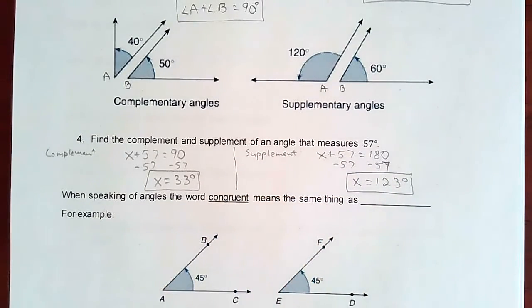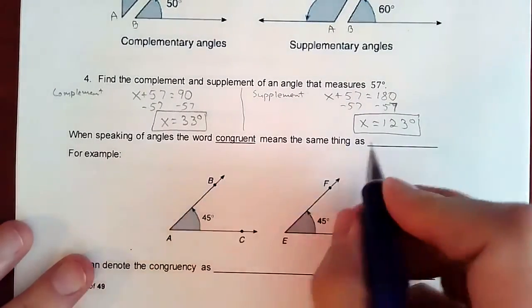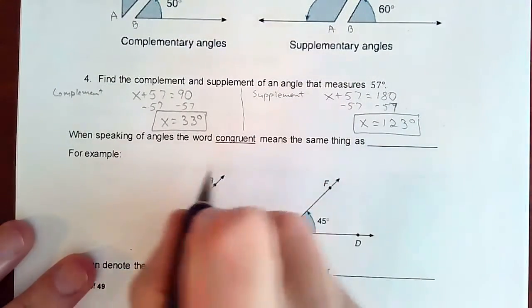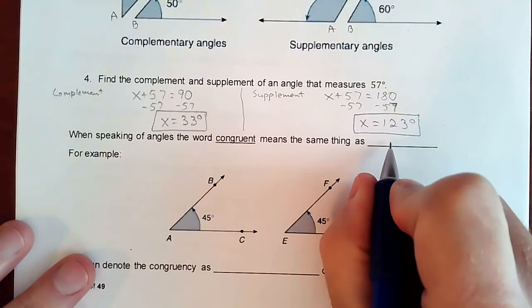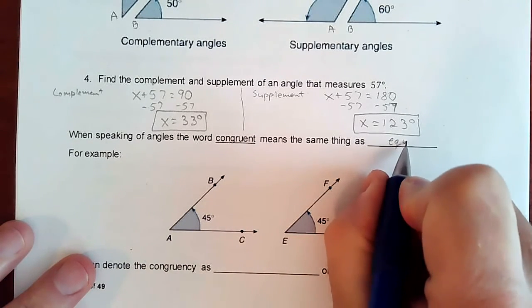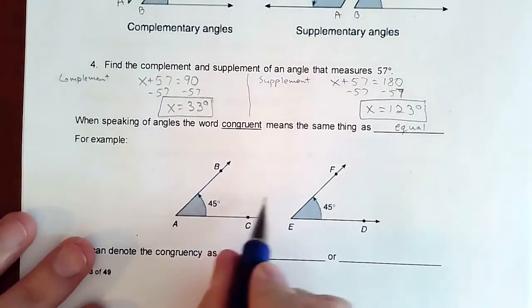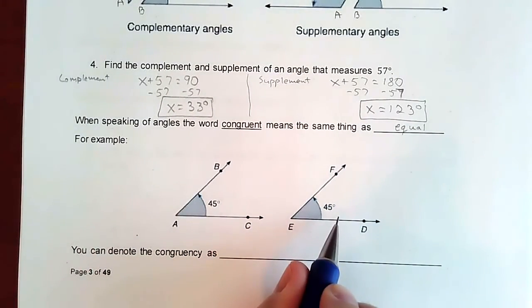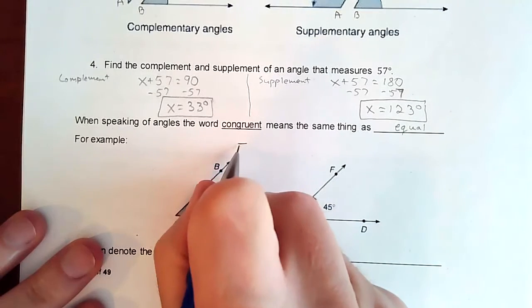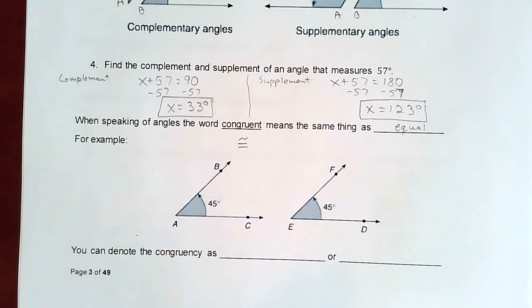Okay. And one last little bit is the word congruent. The word congruent means that the two angles, when they say the two angles are congruent, that means that the angles are equal. And by equal, I mean, if one's 45, then the other one's going to be 45. So the symbol for congruent is an equal sign with a little tilde on. So that represents congruent.